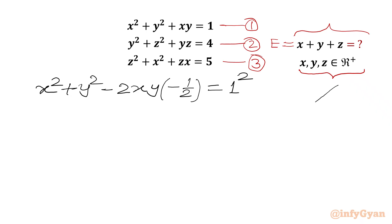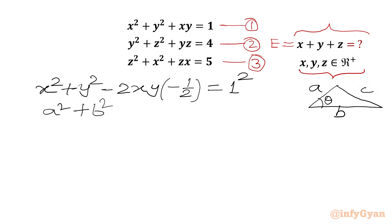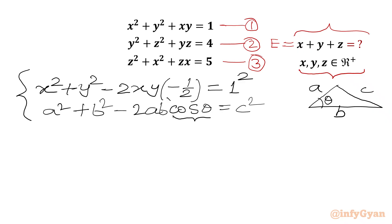Now I am thinking about the cosine rule. For sides a, b with included angle θ and opposite side c, we can write a² + b² − 2ab·cosθ = c². Comparing these two equations, we conclude: c equals 1, and cosθ equals minus one half. So θ equals 120 degrees.